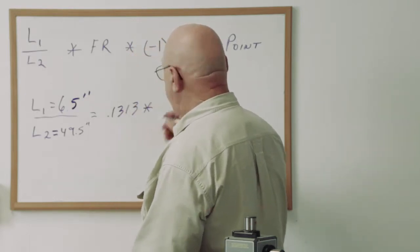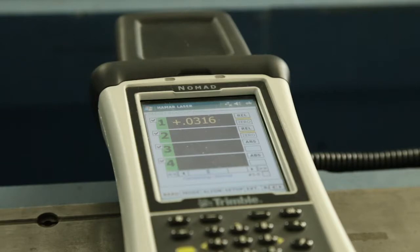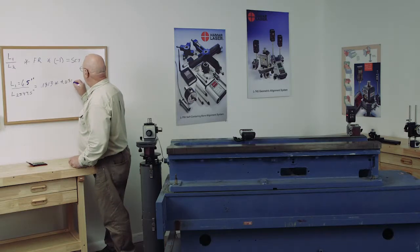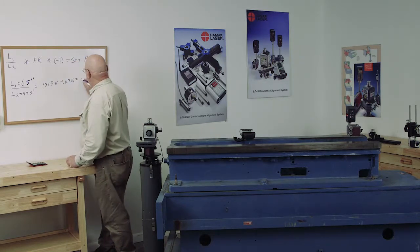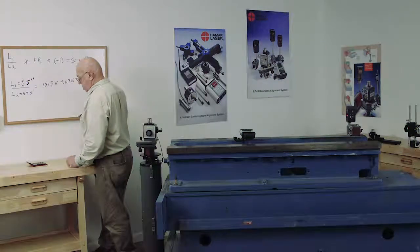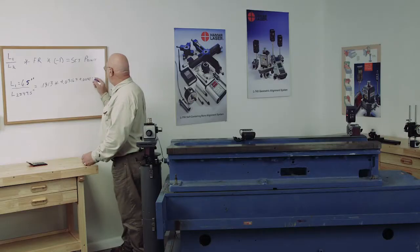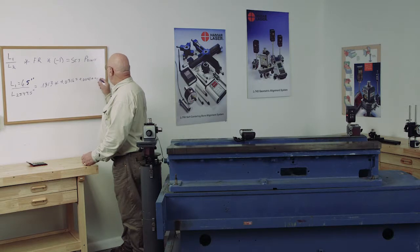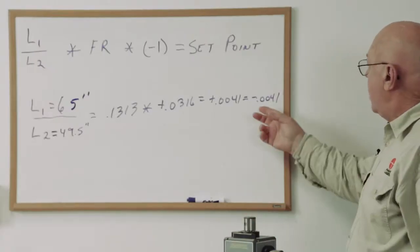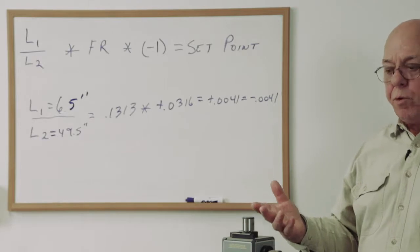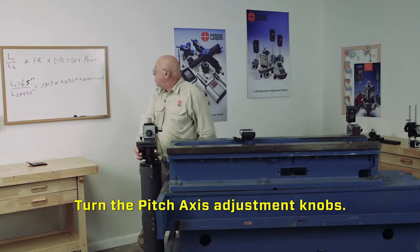I'm going to multiply that times the far reading. The far reading being plus 0.0316. I get plus 0.0041. Now I'm going to multiply that times a negative 1, which gives me a minus 0.0041. When I multiply it by a negative number, I'm just basically changing the sign. So 0.0041 minus becomes my set point. So now I'm going to tilt this until that reads minus 0.0041.